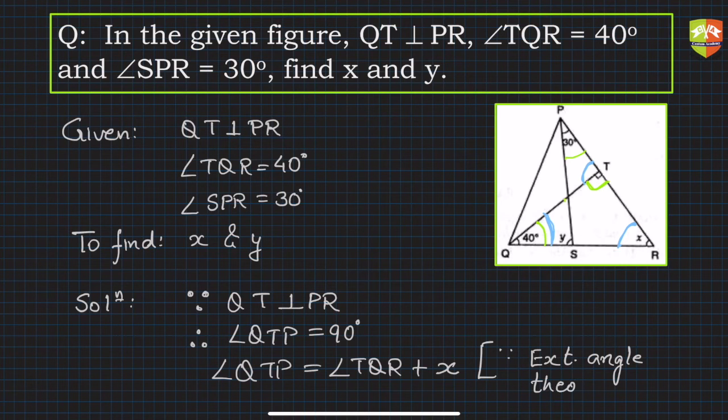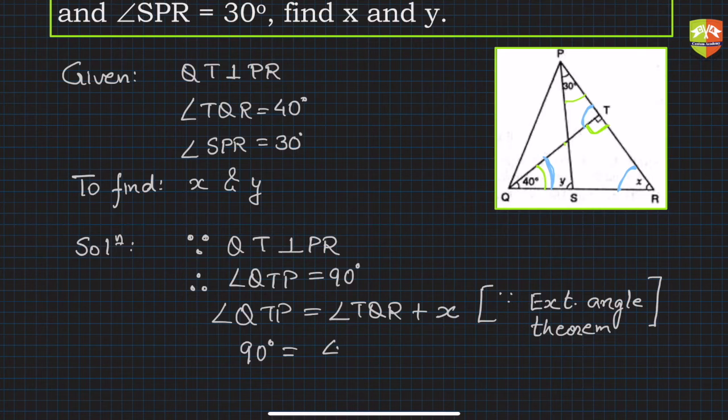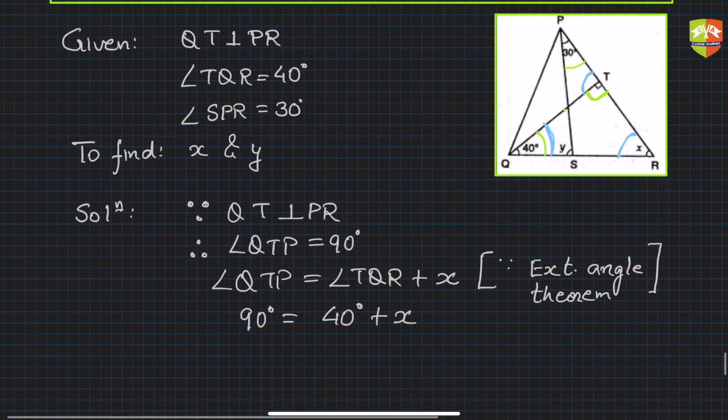So QTP is 90 degrees. TQR is 40 degrees, so 90 degrees equals 40 degrees plus x. So very straightforward now. What is x? X is 90 degrees minus 40 degrees, which is 50 degrees. So we got the value of x.